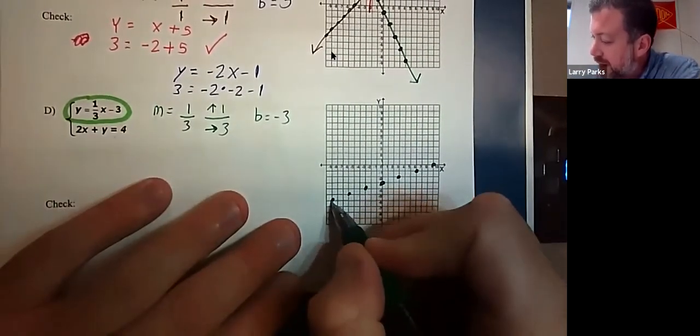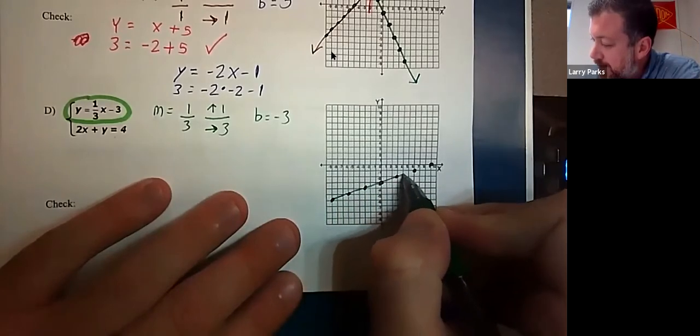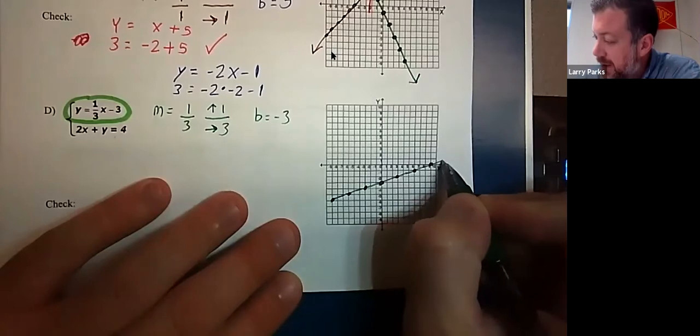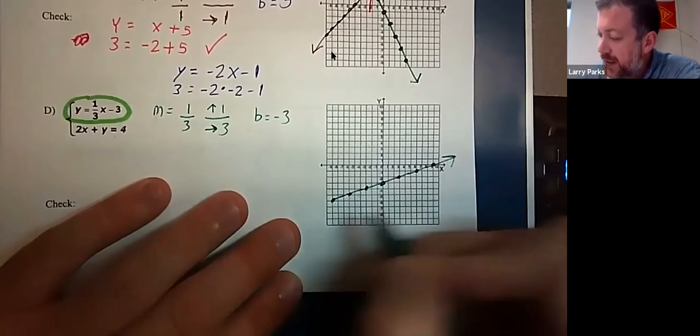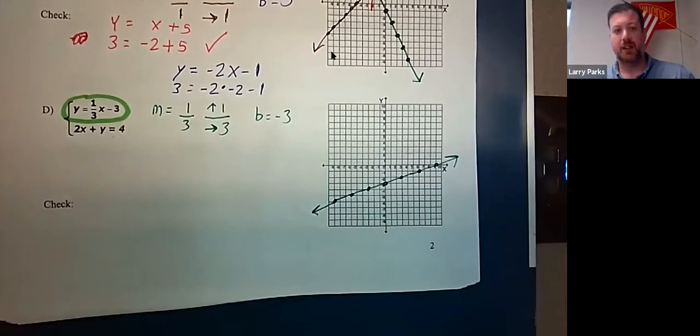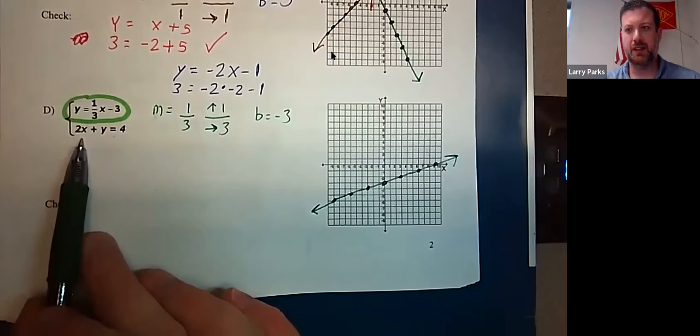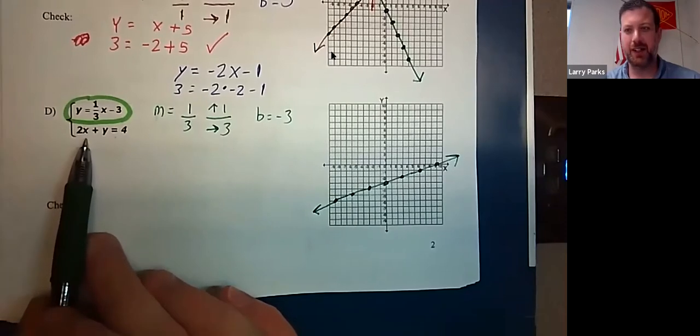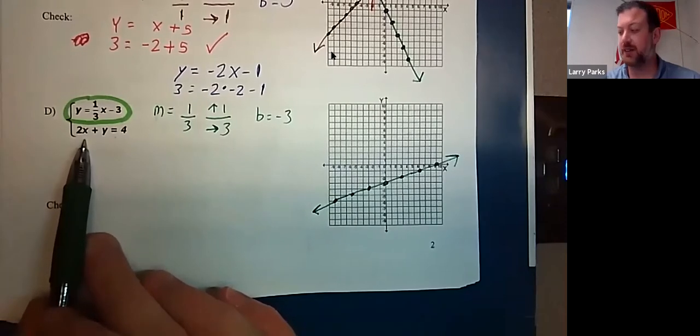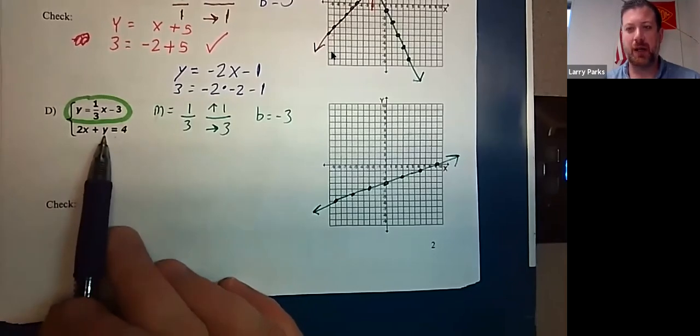Which, again, I struggle with. But I'm at least trying to make a straight line. All right, now the next one. Slope. I don't know. Y-intercept. I don't know. And the reason why I don't know is because we do not have this in Y equals Mx plus B form. So we need to get Y by itself.